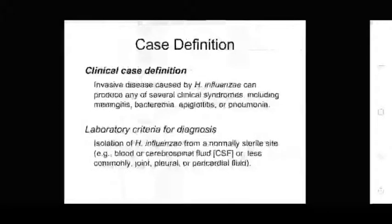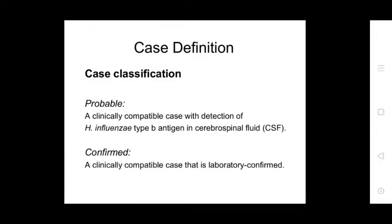Case definitions: invasive disease caused by Haemophilus influenzae can produce several clinical symptoms including meningitis, bacteremia, epiglottitis, or pneumonia. Laboratory criteria for diagnosis: isolation of H. influenzae from a normally sterile site such as blood, cerebrospinal fluid, or less commonly joint, pleural, and pericardial fluid. Probable case: detection of H. influenzae type B antigen in cerebrospinal fluid. Confirmed case: laboratory-confirmed H. influenzae type B.